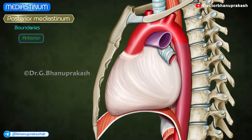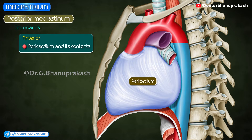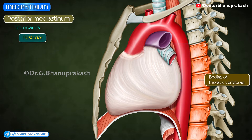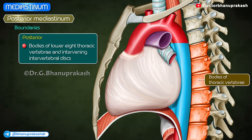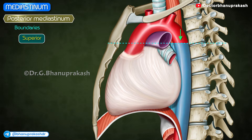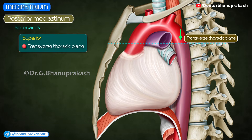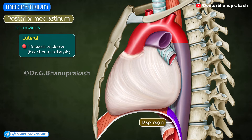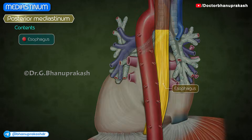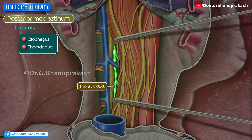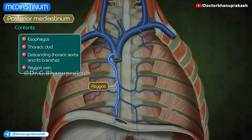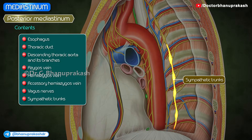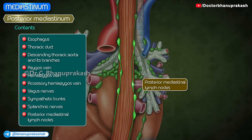Posterior mediastinum — boundaries: anteriorly by the pericardium and its contents, the bifurcation of the trachea, and the pulmonary vessels; posteriorly by the bodies of the lower eight thoracic vertebrae and intervening intervertebral discs; superiorly by the transverse thoracic plane separating the superior from the inferior mediastinum; inferiorly by the diaphragm; and on each side by the mediastinal pleura. Contents: esophagus, thoracic duct, descending thoracic aorta and its branches, azygous, hemiazygous, and accessory hemiazygous veins, vagus nerves, sympathetic trunks and splanchnic nerves, and posterior mediastinal lymph nodes.